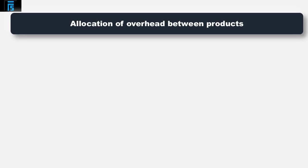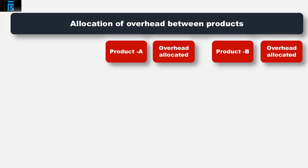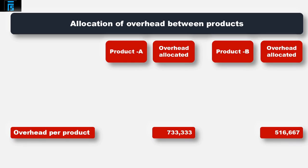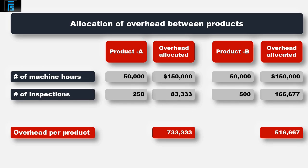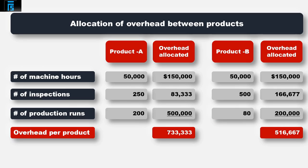Let's focus on the allocation of overhead between the two products and understand how activity based costing has split each overhead type between Product A and Product B. Both A and B have used the same number of machine hours — 50,000 — meaning the same machine overhead of $150,000 is absorbed by each. Even though B has used twice the number of inspections as A (500 compared to 250), Product A used 200 production runs compared to B's 80. Given the significant overhead absorption rate of $2,500 per production run, Product A absorbs $500,000 of set-up costs compared to $200,000 for Product B.